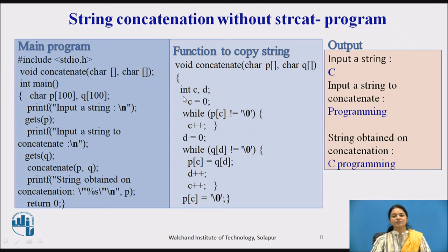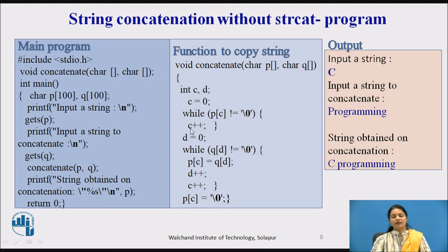Inside the concatenate function, we declare integers c and d for counting. We set c equal to 0. Then we go through the destination string — that is, the first string — checking p[c] character by character until it reaches null. We increment character by character, completing this while loop.